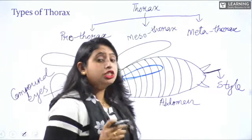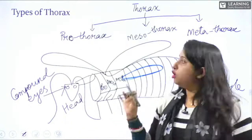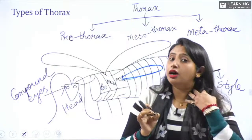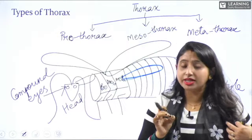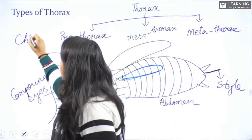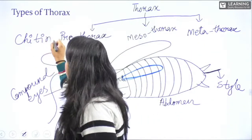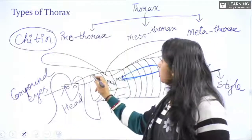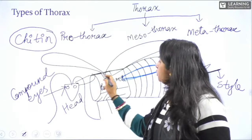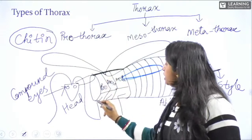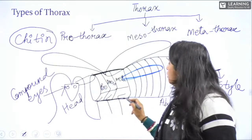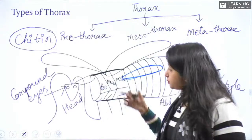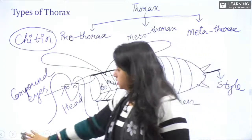The body of the cockroach has a thick outer covering made up of chitin — C-H-I-T-I-N. This chitin forms the outer layer of the body and provides protection. The entire body is covered with chitin.